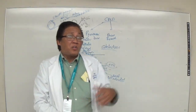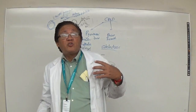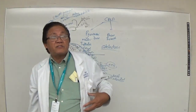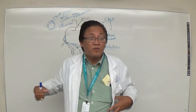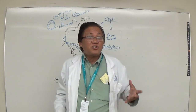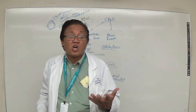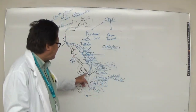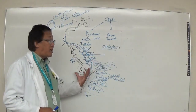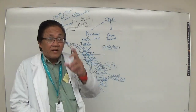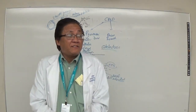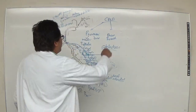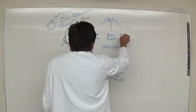A chest X-ray determines the side of pneumothorax or hemothorax. You insert the chest tube on the affected side — tube thoracostomy — to drain the air or blood that is pushing the lung to one side, causing collapse and preventing gas exchange.